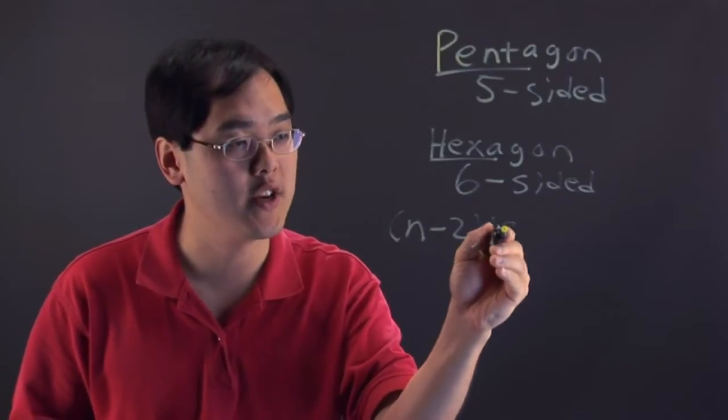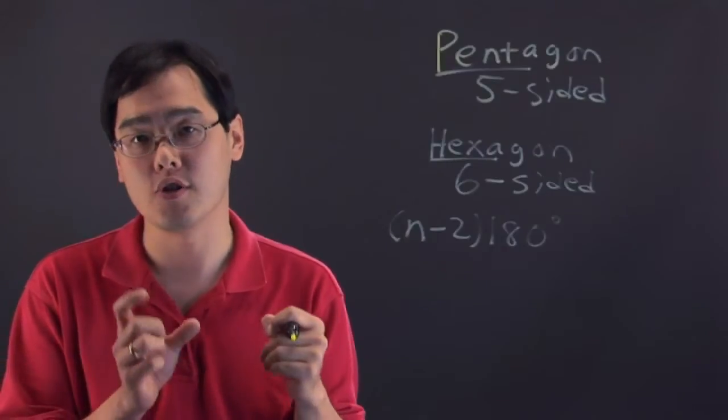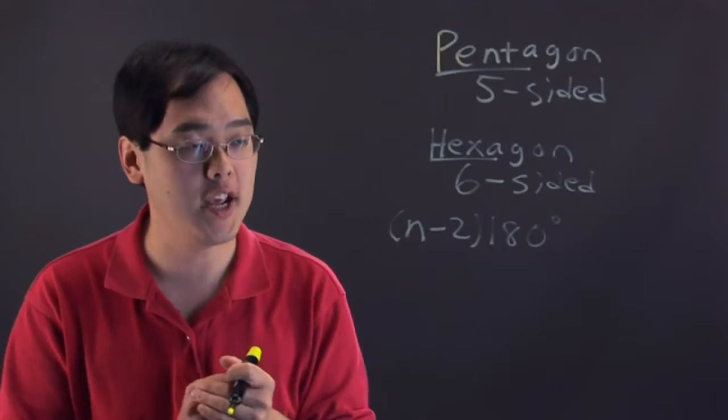(n-2) times 180 degrees - between the two shapes there's going to be a difference in terms of the total number of degrees in each shape.